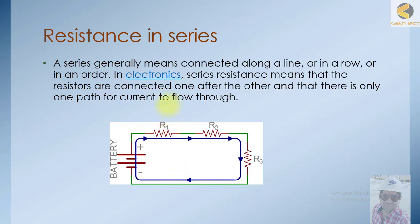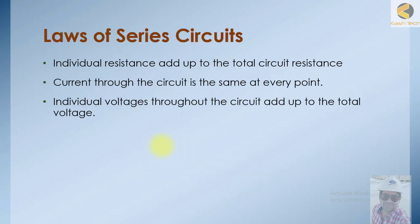We will look at resistance in series with examples showing how to calculate it. Further, we will take the laws of series circuits: individual resistances add up to the total; circuit current through the circuit is the same at every point; and individual voltages throughout the circuit add up to the total voltage.